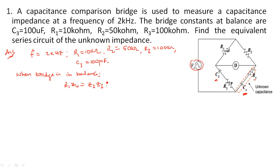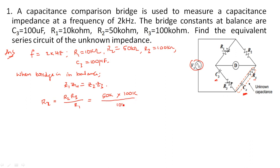Using the formula derived from the balanced condition, the unknown resistance is Rx = (R2·R3) / R1. Substituting: R2 = 50 kΩ, R3 = 100 kΩ, R1 = 10 kΩ. The kilo units cancel, zeros cancel, giving Rx = 500 kΩ.